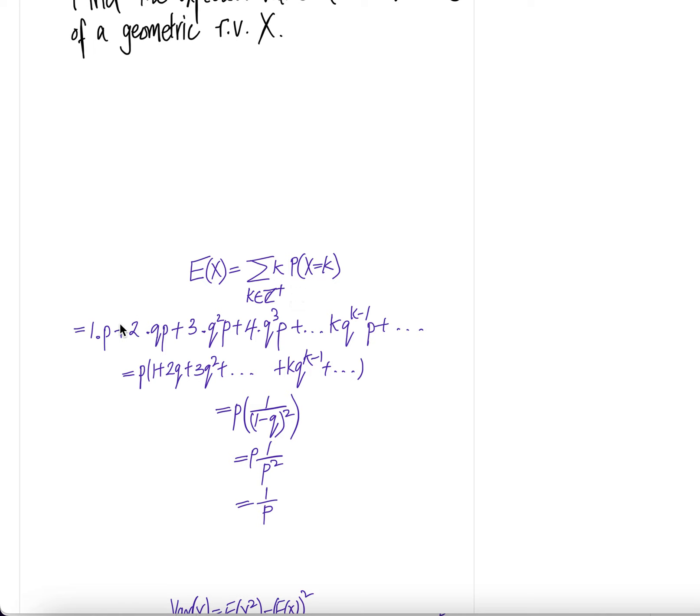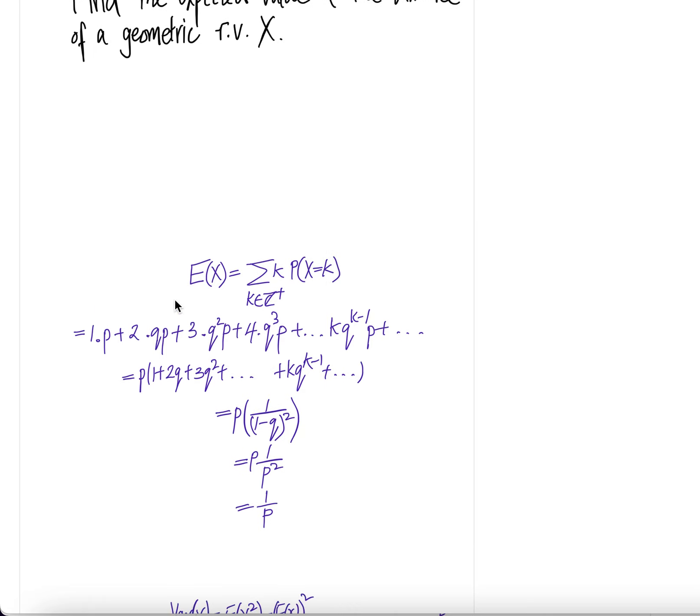Now, for the geometric random variable, when k equals 1, k equals 2, k equals 3, k equals 4, k equals k, and then plus dot dot dot.